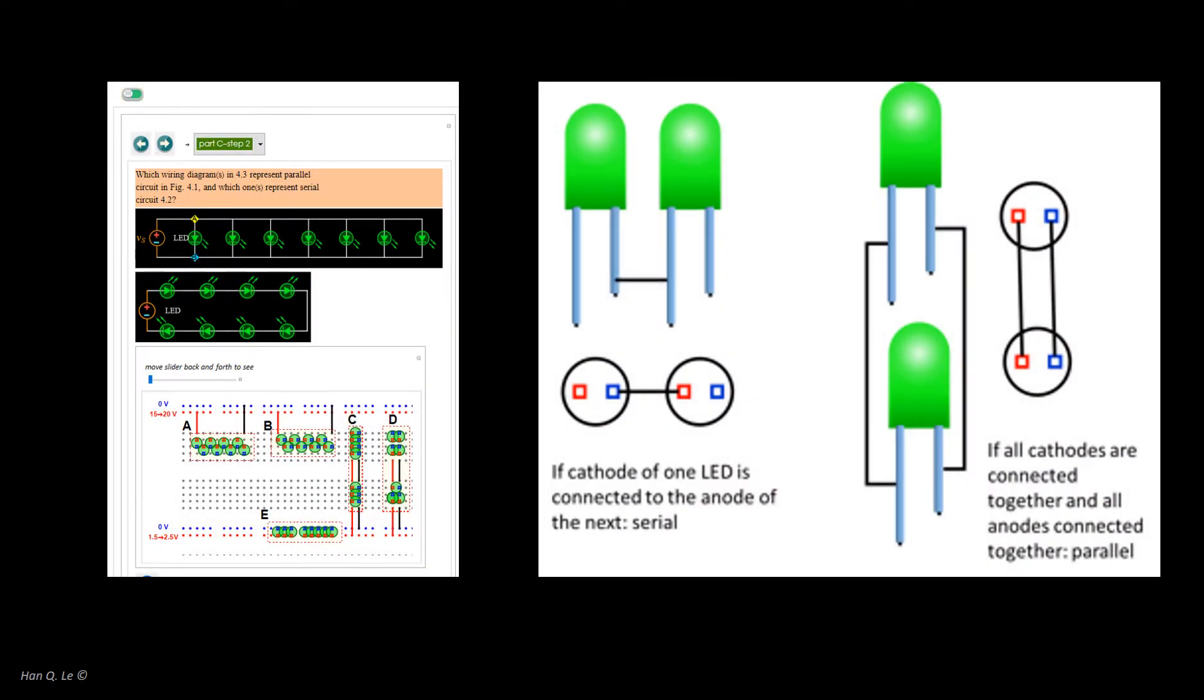If the LED terminals of the same type, that is, anode or cathode, are connected together, they are in parallel. If one LED anode is connected to another LED cathode, they are in series.